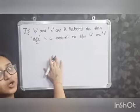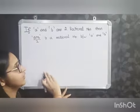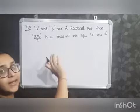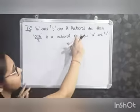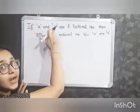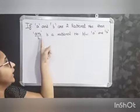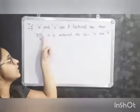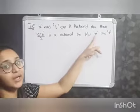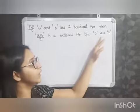Now, there is another concept to find a rational number between two rational numbers. Previously, how did you find? By making them into like fractions. Now, there is another concept which says that if you have two rational numbers A and B, then A plus B by 2 is a rational number between A and B.